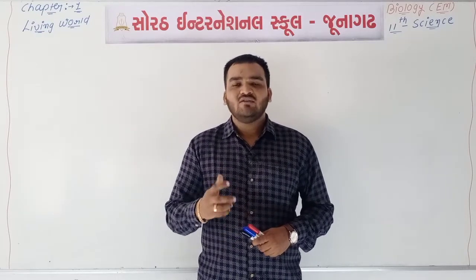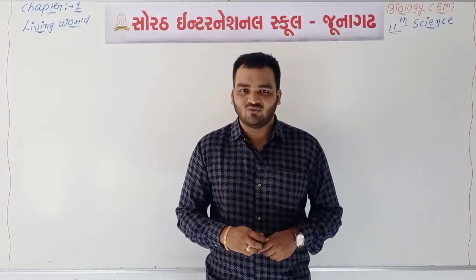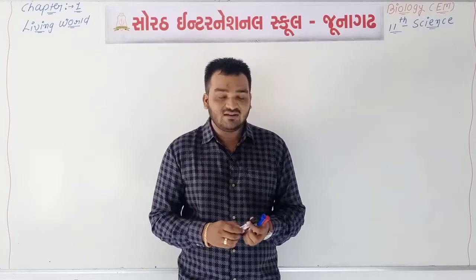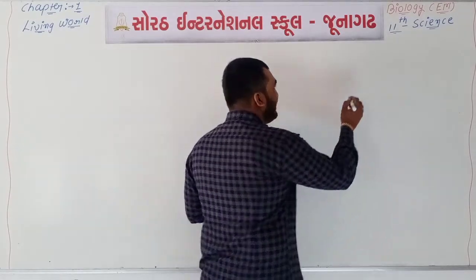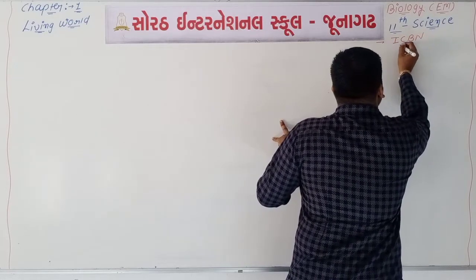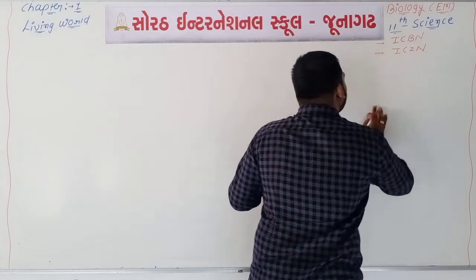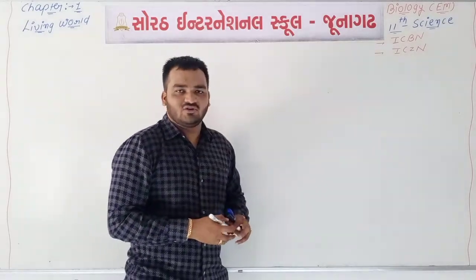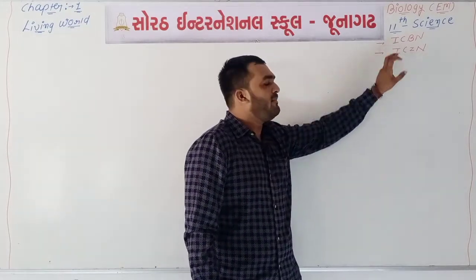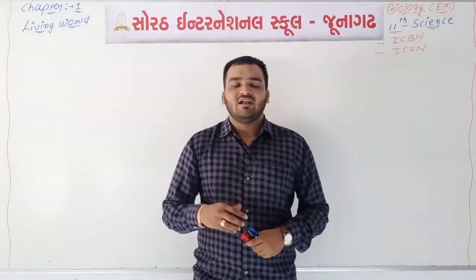Scientists established two different types of institutes: the first is ICBN and the second is ICZN. ICBN stands for International Code for Botanical Nomenclature, and ICZN stands for International Code for Zoological Nomenclature. ICBN is connected with the rules, regulations, and criteria for plants.